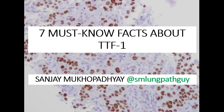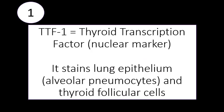Today we'll be talking about one of my favorite immunohistochemical markers in lung pathology: TTF1 or thyroid transcription factor 1. Thyroid transcription factor is a nuclear marker, like other nuclear markers we've talked about in other videos like PAX8 or GATA-3, and it stains lung epithelium — especially alveolar pneumocytes — and thyroid epithelium, specifically thyroid follicular cells.